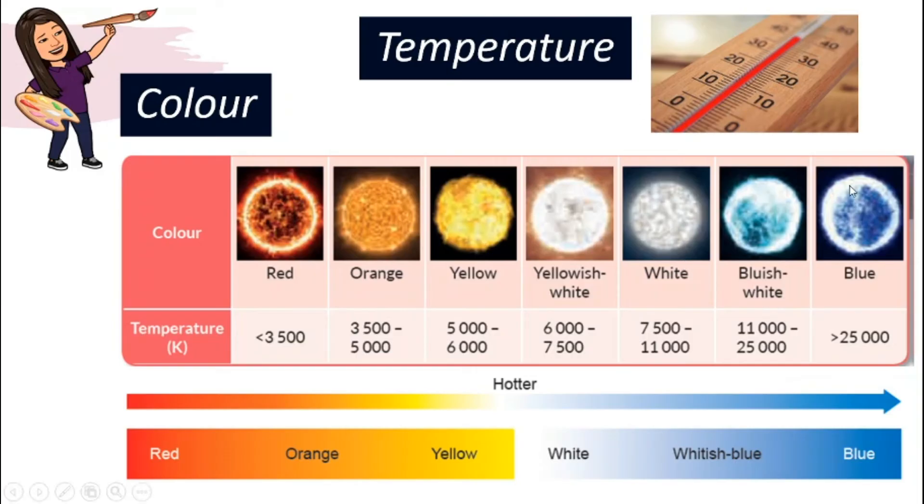From the highest temperature to the lowest temperature of a star, we can see the change of color from blue, whitish blue, white, then it will slowly go into yellow, orange, and finally red. So here is a clue of the temperature of the star.